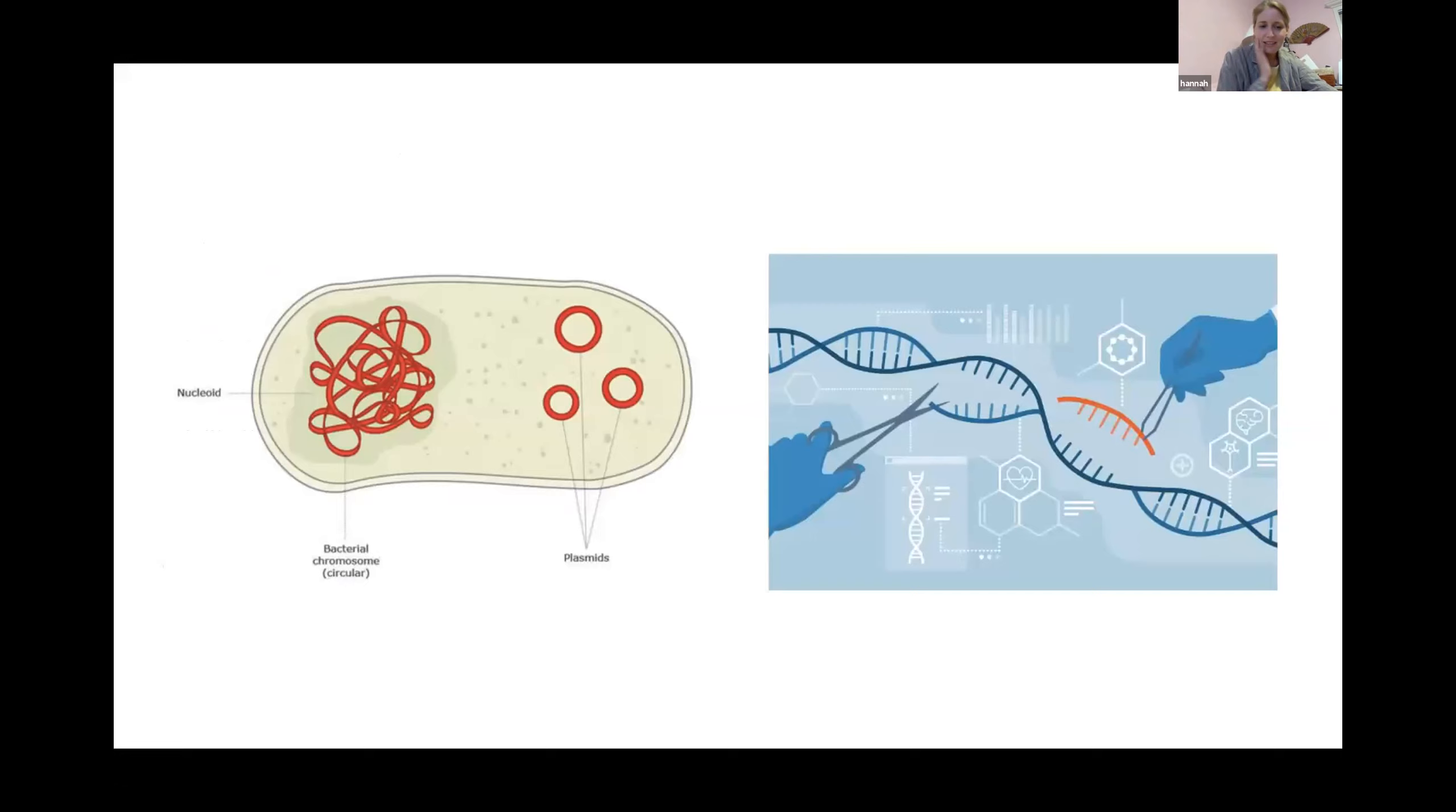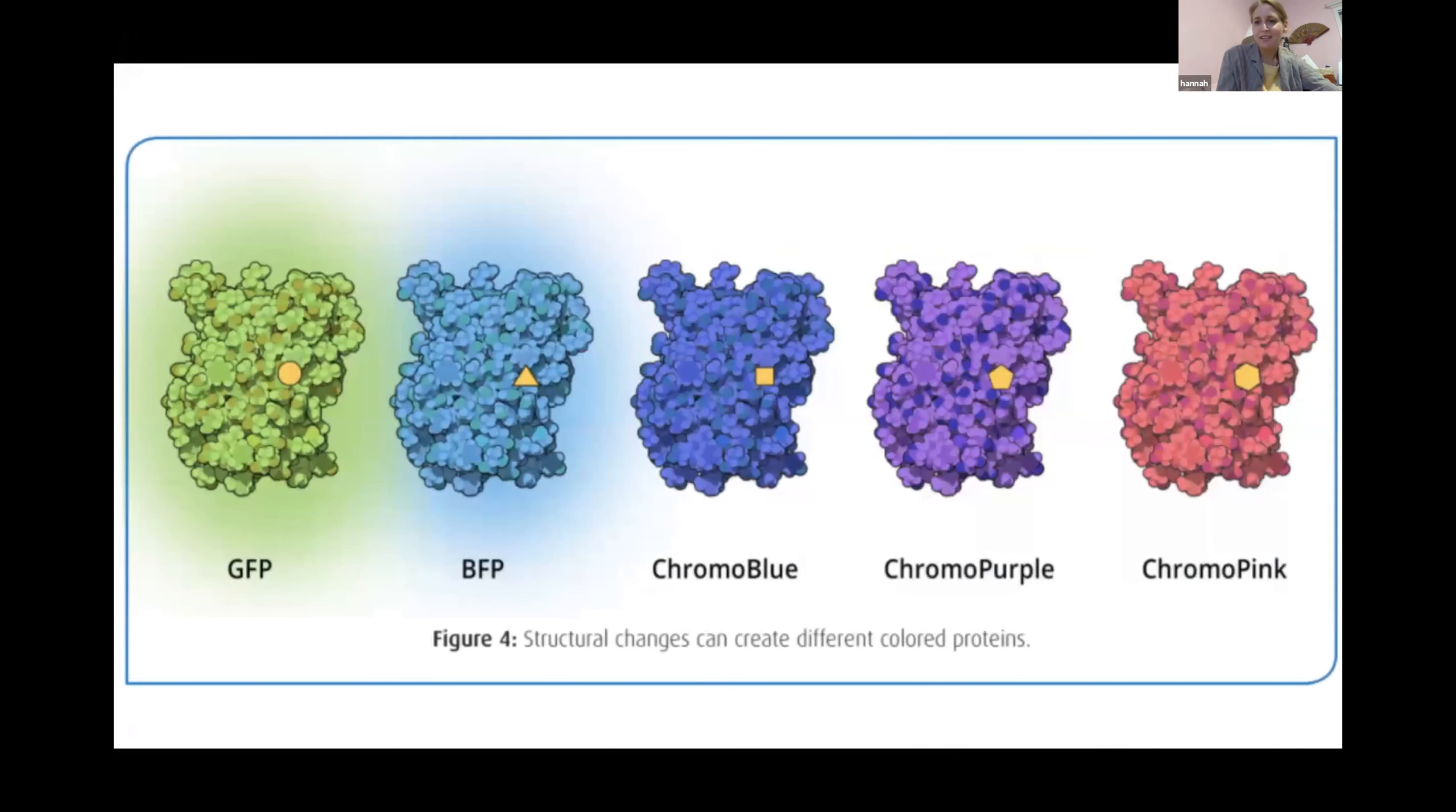And the way they do that is by changing the bacteria DNA. So bacteria have genomes just like people and all other animals and even just like viruses. And so the way the scientists made these bacteria green is by giving them this gene that makes the bacteria produce a green pigment. And so this pigment, they can also tweak and make it not just green but blue and purple and pink.